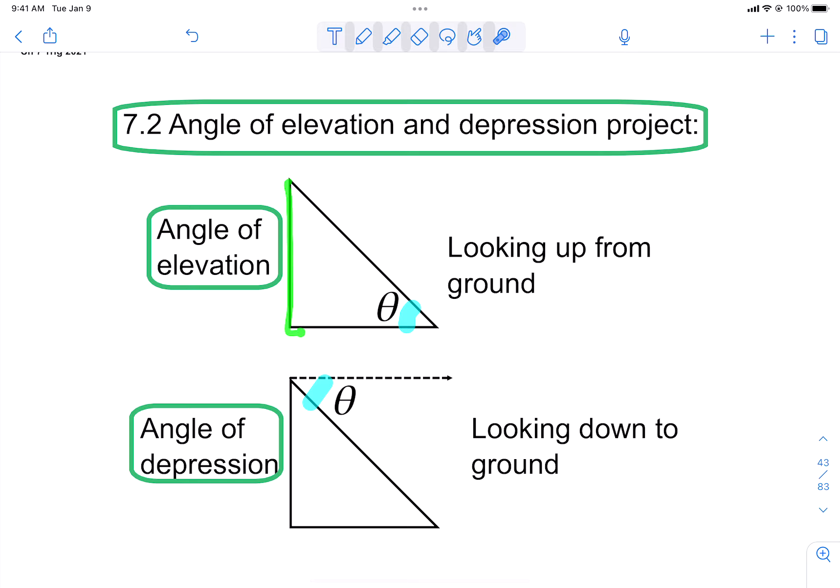We still are assuming we are in a right triangle. So this length would be our opposite, this would be our adjacent, and this would be our hypotenuse.